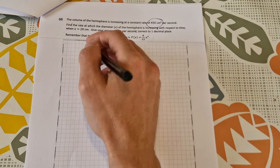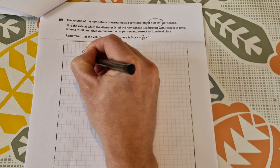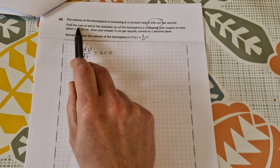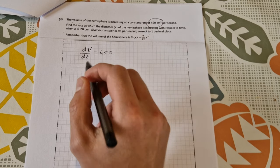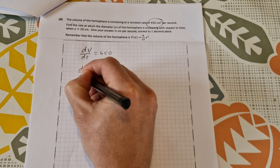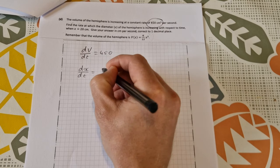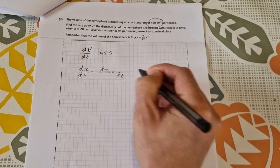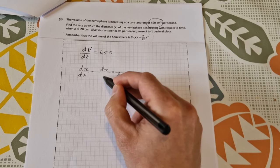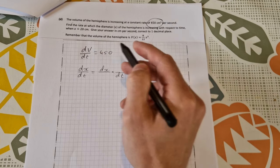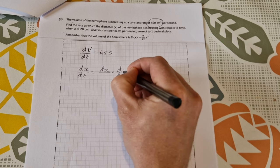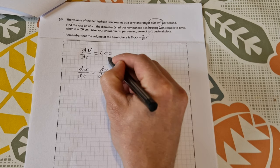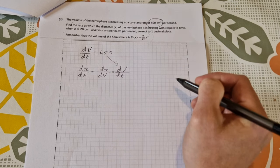We have, first of all, the volume of the hemisphere is given to us. The volume is increasing. That is dv dt. That's equal to 450. We're looking for the rate at which the diameter is changing. So that is dx dt. So dx dt, using our rates of change formula, you split up dx and dt. And then you have a look, what else do we have? What goes in here and here? Well, we've just said that we have dv dt. So that means stick dv there, dv dt. And you have to stick dv there as well. So we have dv dt. It's that. We need to find dx dv.